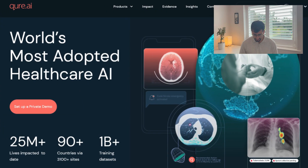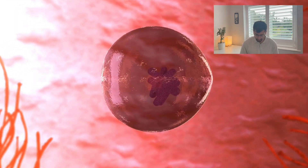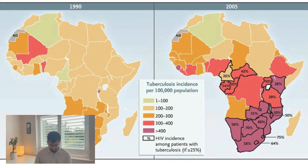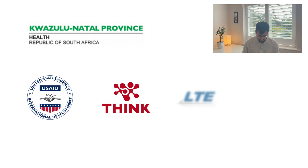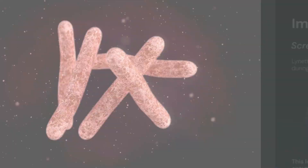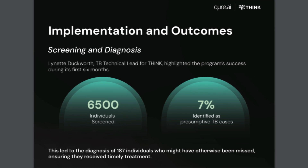Cure.ai, an AI company based in India, has developed an AI platform that assists healthcare workers in diagnosing the infectious lung disease tuberculosis (TB) from x-rays. South Africa faces a severe TB crisis, with 280,000 cases and 54,000 deaths annually. The KwaZulu Natal Department of Health collaborated with USAID, THINK, LTE Medical Solutions, and Cure.ai to enhance TB diagnosis using AI-augmented portable x-ray machines in mobile vans. The program screened 6,500 individuals in the first six months, identifying 187 tuberculosis cases that might have been missed. Such AI platforms enable detection of diseases like TB without the need for radiologists, providing a service to remote, underdeveloped regions where such specialties are scarce.